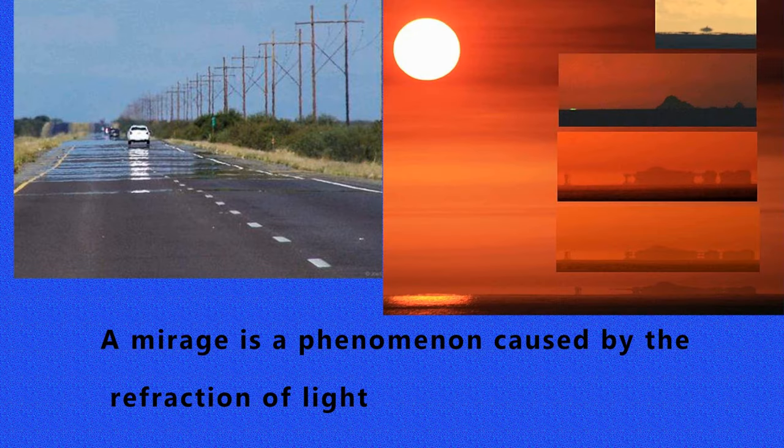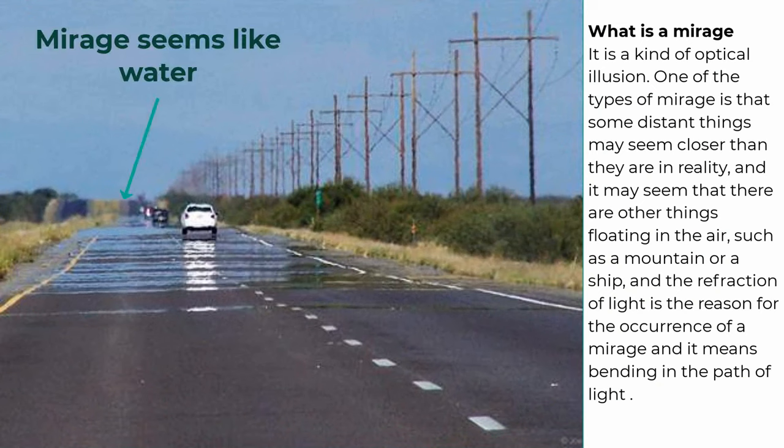A mirage is a phenomenon caused by the refraction of light. What is a mirage? It is a kind of optical illusion. One of the types of mirage is that some distant things may seem closer than they are in reality, and it may seem that there are other things floating in the air, such as a mountain or a ship. And the refraction of light is the reason for the occurrence of a mirage, and it means bending in the path of light.